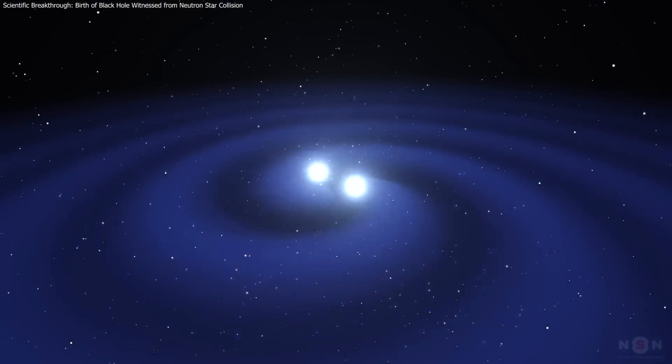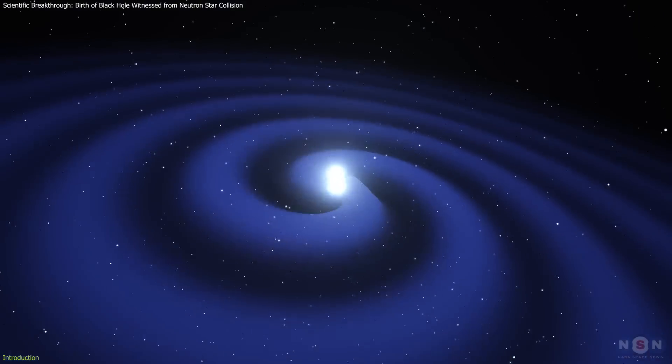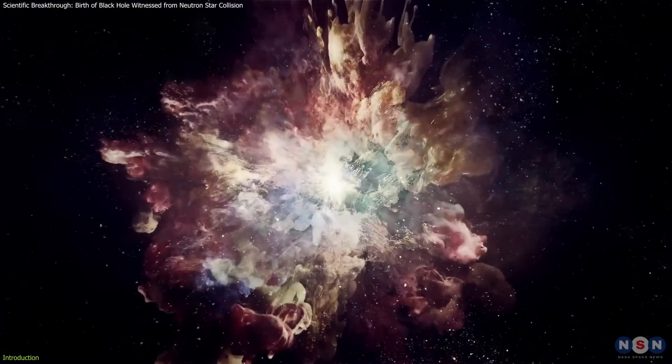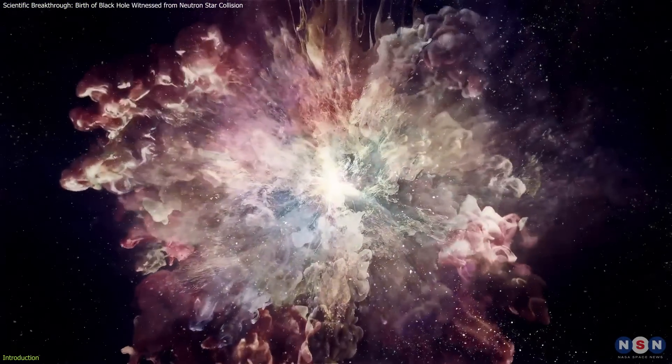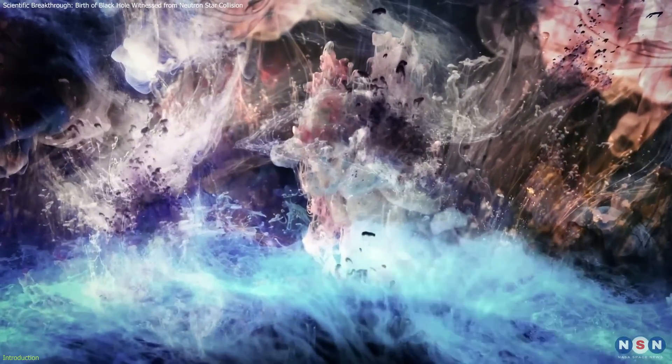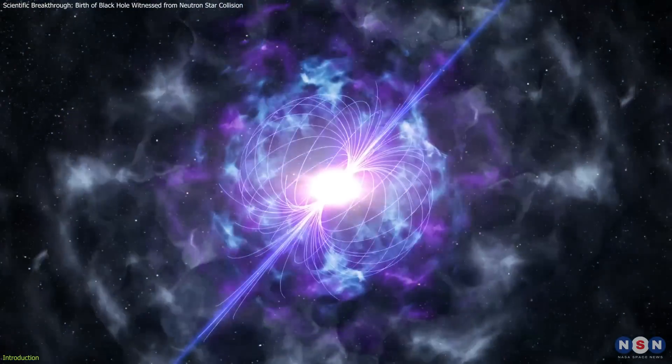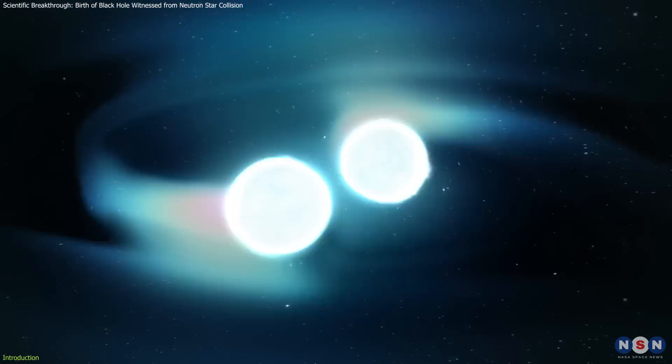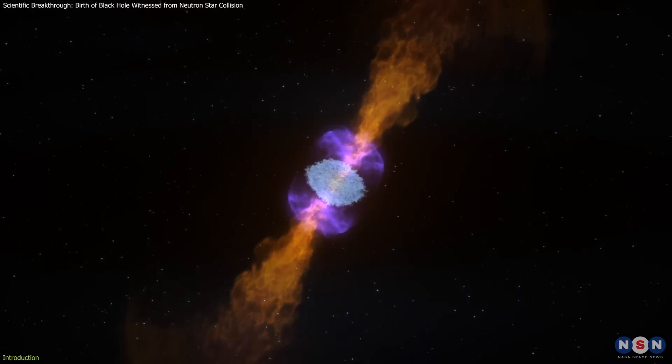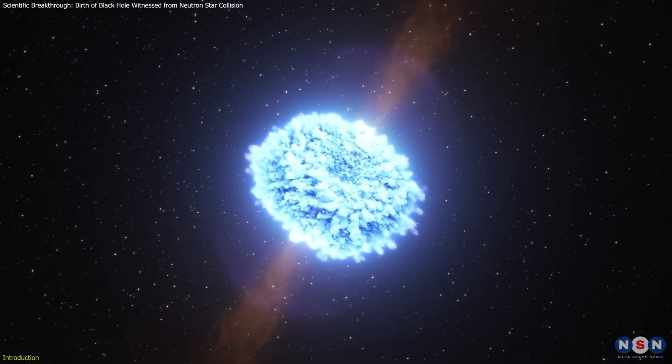For the first time, scientists have been able to witness two neutron stars colliding and creating not only a black hole, but also birthing atoms that we find right here on Earth, like gold, silver, and even uranium. Imagine the sheer power behind this collision. These stars were so dense and their crash so intense that it transformed into one of the brightest events in the universe, called a kilonova.